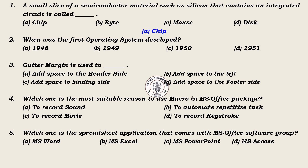2. When was the first operating system developed? A. 1948, B. 1949, C. 1950, D. 1951. Answer: C. 1950.